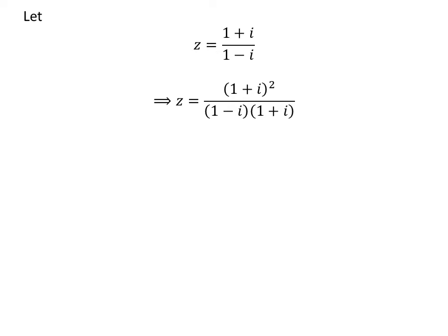As multiplying the numerator and denominator by a common factor does not change the value of the fraction, let us multiply both by (1+i). So z = (1+i)²/[(1-i)(1+i)].